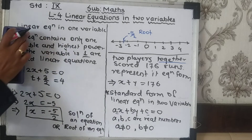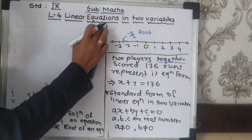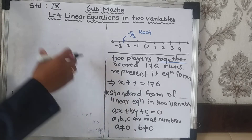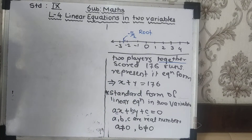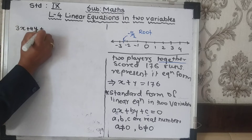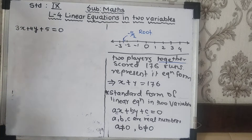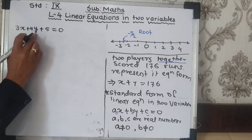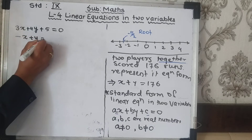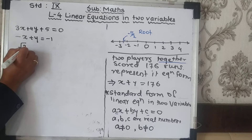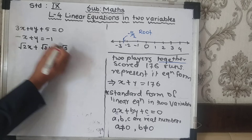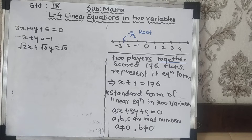Let us see a few examples of linear equations in 2 variables: 3x + 4y + 5 = 0, then -x + y = -1, and √2x + √3y = √5. All of these are linear equations in 2 variables, with x and y as the two different variables.